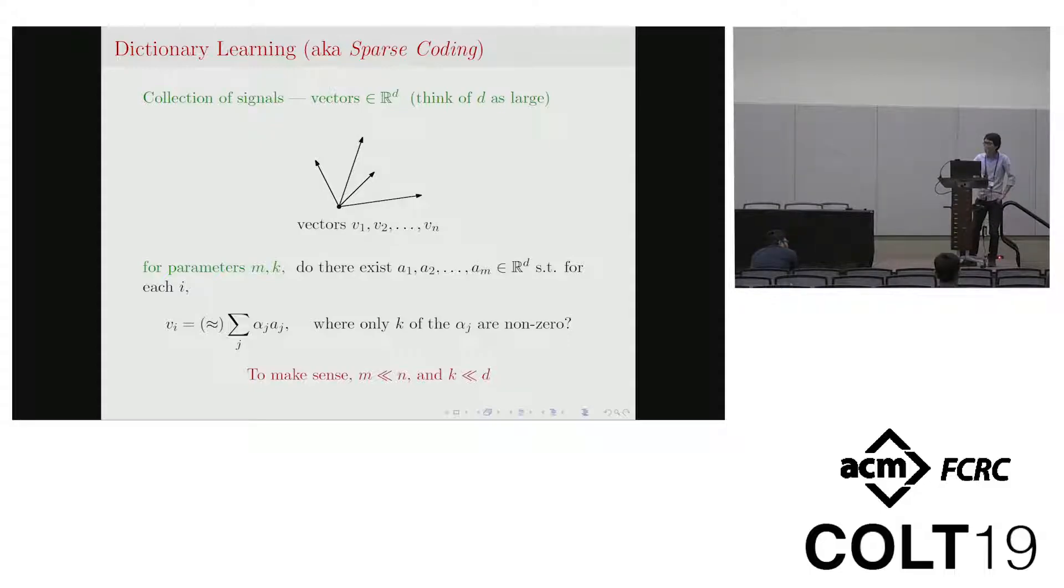So here is the dictionary learning problem. Suppose we have v vectors v1 to vn from d dimensional Euclidean space, and we also have two parameters m and k. Then your task here is to find m vectors in this d dimensional Euclidean space such that each vector vi from our input can be represented as the linear combination of at most k of them. In order to make the problem interesting, we would like to assume that m is much smaller than n and k is much smaller than d.